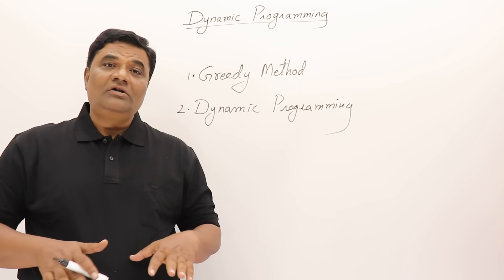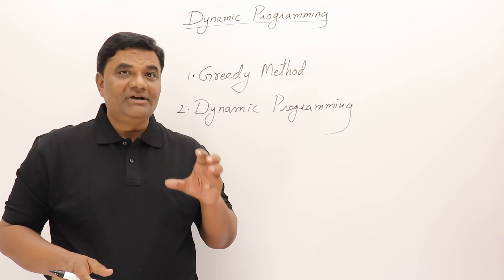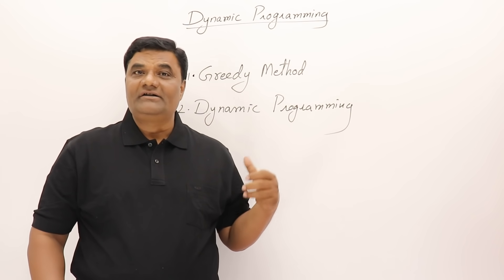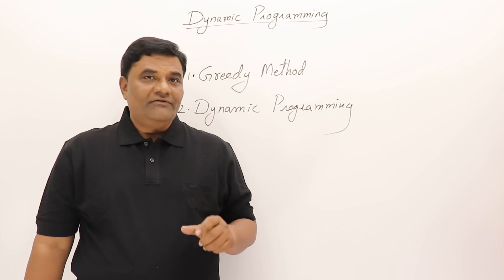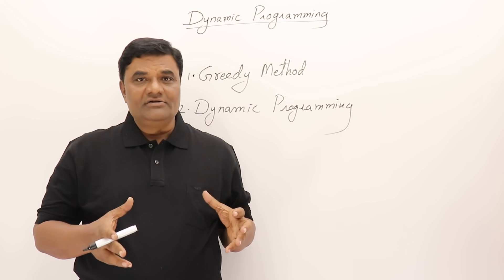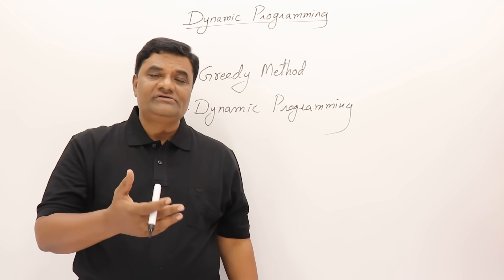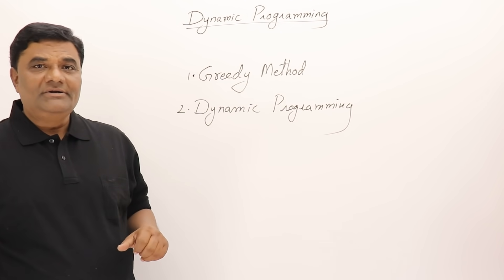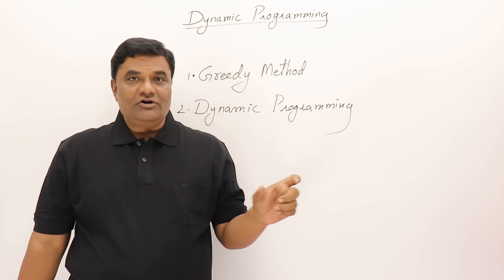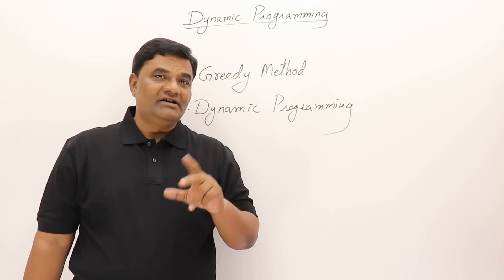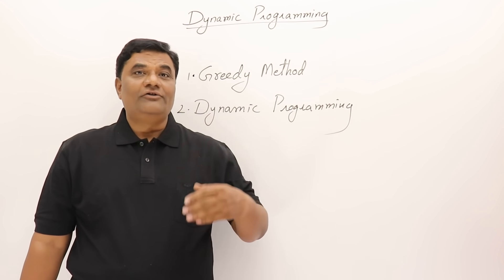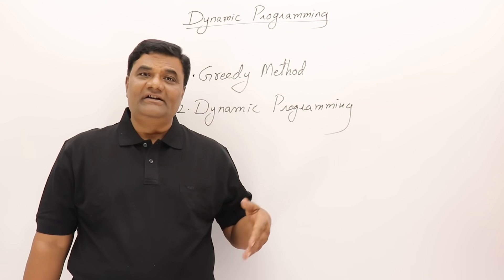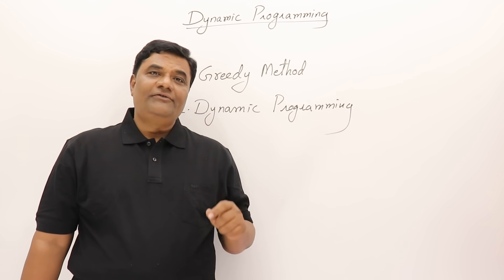In dynamic programming we try to find all possible solutions and then pick the best one — the optimal solution. This approach is different and a little more time-consuming compared to greedy method. For any problem there may be many feasible solutions, so we try all of them and pick the best one. Dynamic programming problems are mostly solved using recursive formulas, though they are typically implemented using iteration.